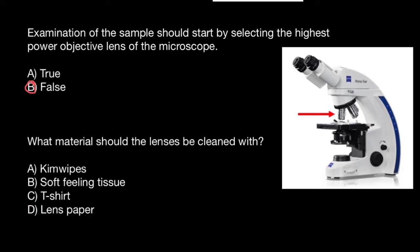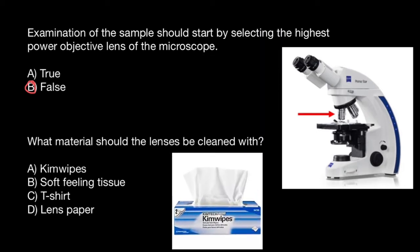Chem wipes are a type of cleaning tissue commonly used in laboratories, originally developed over 60 years ago by Kimberly-Clark, intended for a variety of applications that require lint-free cleaning, such as slides, pipettes, and cuvettes. They can also be used to clean optical lenses and other delicate surfaces, although the manufacturer recommends using wipes specially designed for this purpose.